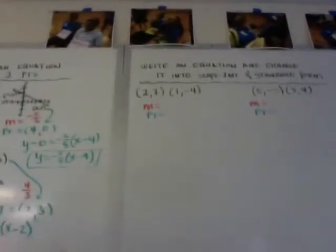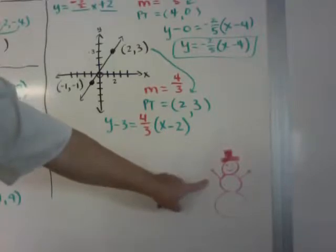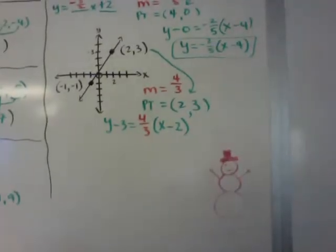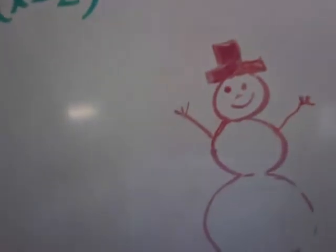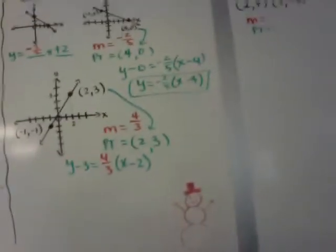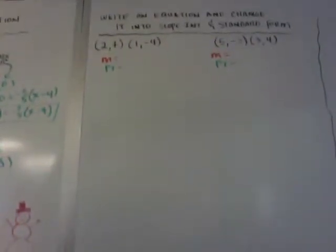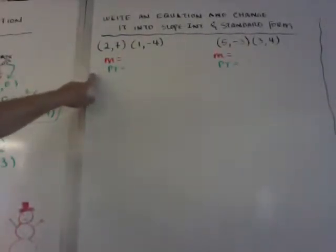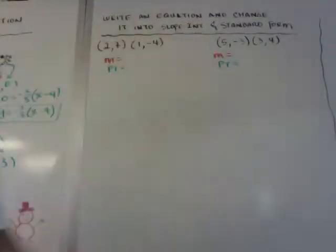When they give you two points in coordinate form, you find the slope and write point-slope. They may also ask you to convert: once you have point-slope, they might ask you to change it into slope-intercept and/or standard form. I'll show you how to switch back and forth between each type.